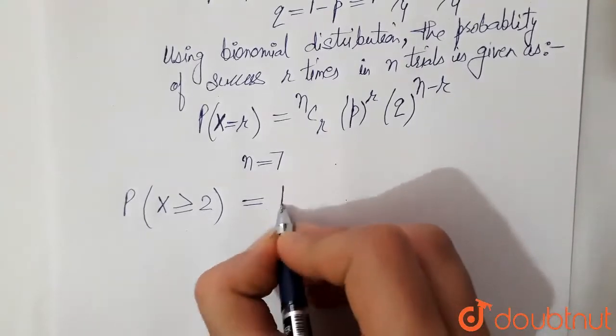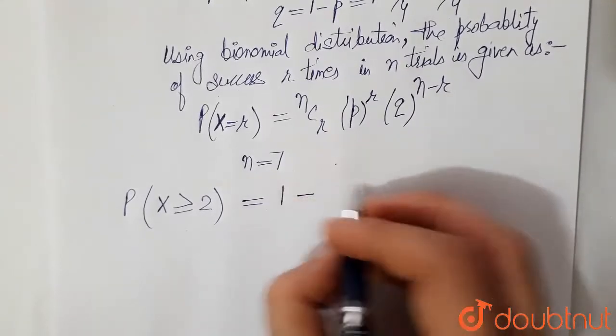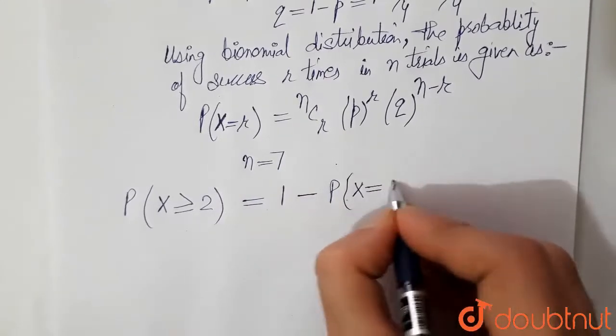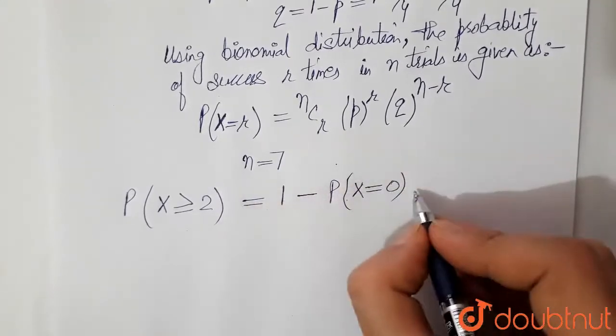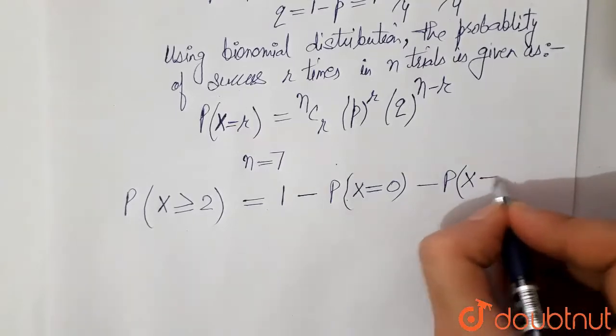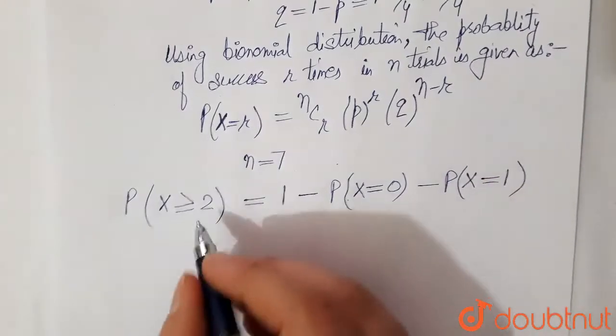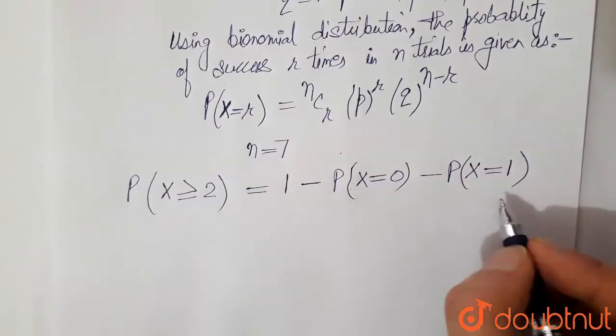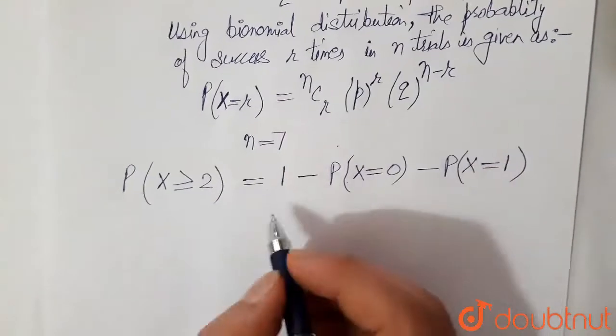But this can be also written as 1 minus, total probability is 1, so 1 minus probability of his hitting 0 minus probability of his hitting only one time. So probability of his hitting greater than equal to 2 can be written like this.